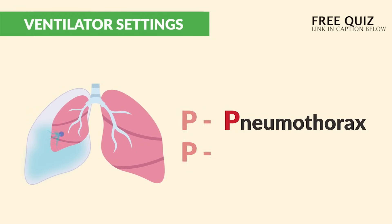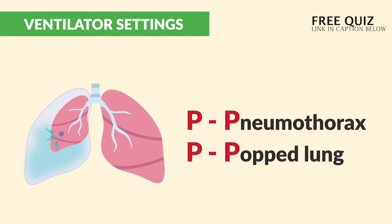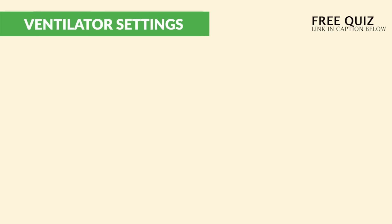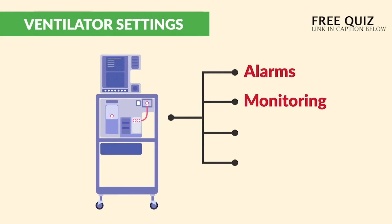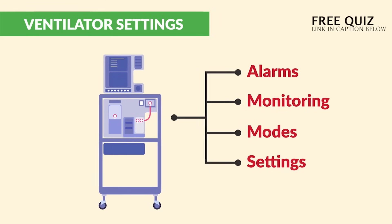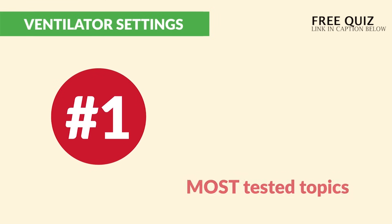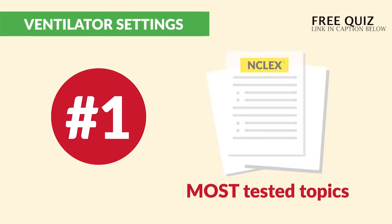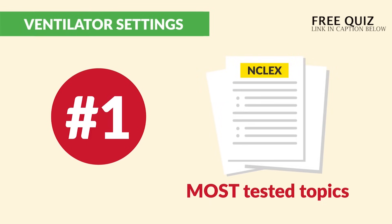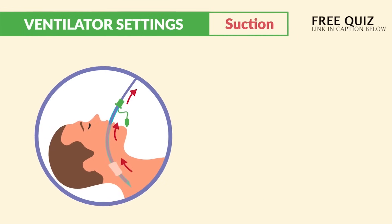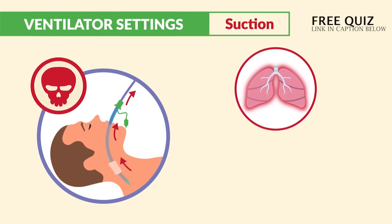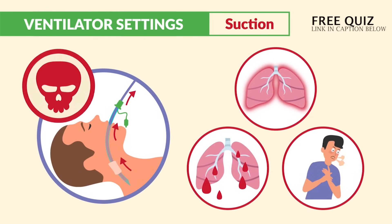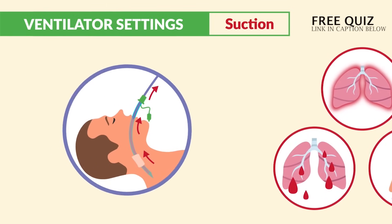We'll cover pneumothorax in the complications segment, along with all the ventilator settings including alarms, monitoring, modes, and settings. But first, let's cover the most tested topics for your NCLEX and exams. First up is suctioning, which causes a huge risk for trauma, bleeding, and hypoxia — that low oxygen — so it's only performed when needed.